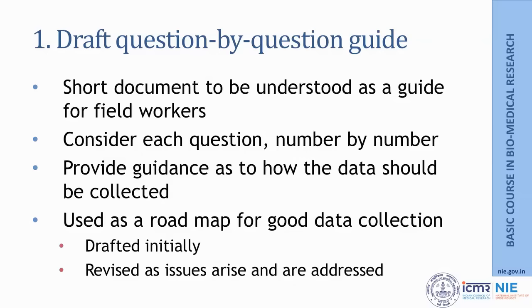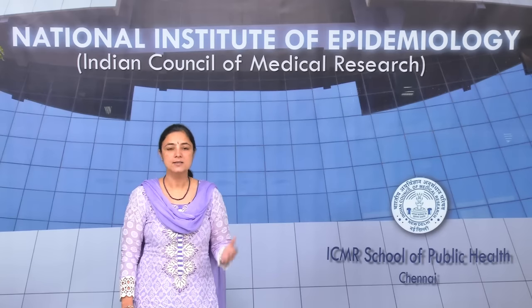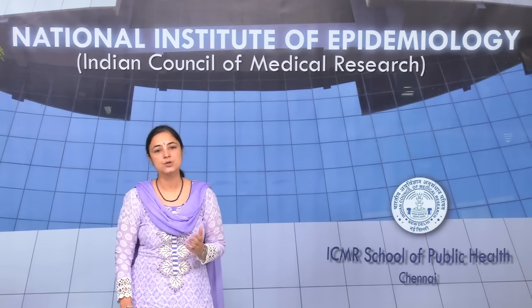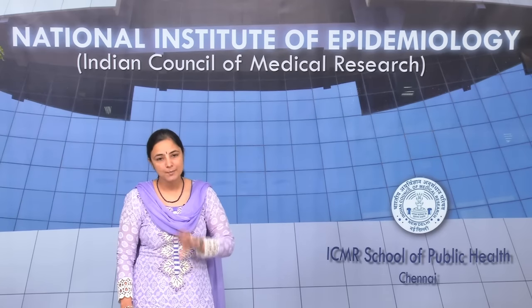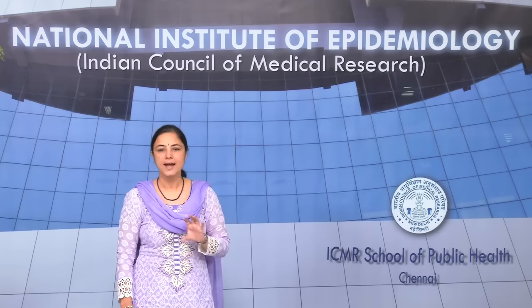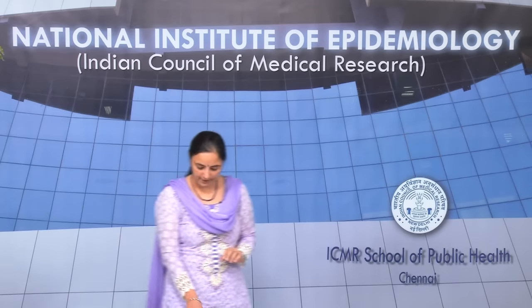In certain situations you may want investigators to probe further on a particular question, and you can make mention of that. The guide also explains where to skip questions and where to give more emphasis. It serves as a road map — at any point of time when there is doubt or inconsistency, investigators can go back to this document. If difficulties arise in the field and changes are needed, they should be documented in the Q-by-Q guide at that point.